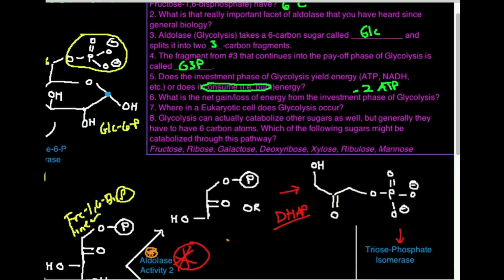Where in the eukaryotic cell does glycolysis occur? Glycolysis only occurs in the cytosol or cytoplasm. It does not occur in the mitochondria. It does not occur in organelles. It only occurs in the cytosol — very important point.